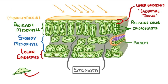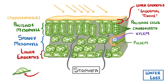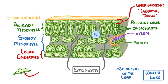Now the main problem that leaves face is water loss. The xylem, which runs next to the phloem here, continually brings water up from the roots for the palisade cells to use in photosynthesis. But that water can be lost from both the top and bottom of the leaf. To reduce this water loss, the leaf has a waxy cuticle on top, which is basically a thin waterproof layer of lipids that the water can't get through.